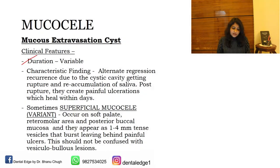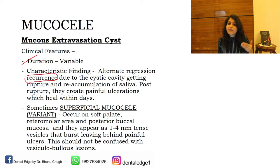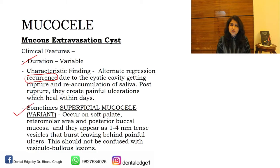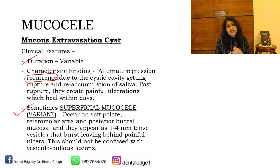Duration is variable. A characteristic finding is that the patient may report recurrent swelling — the swelling may burst and fluid escapes into the oral cavity, leading to an ulcer that heals, and then again due to the severed duct the mucin pools and the swelling returns. There is a variant called superficial mucocele: small vesicles 1 to 4 mm in size, usually seen on uncommon sites like soft palate, retromolar area, and posterior buccal mucosa. They burst leading to painful ulcers and can be confused with a vesicular bullous lesion.